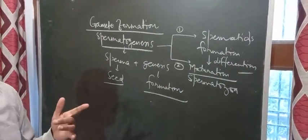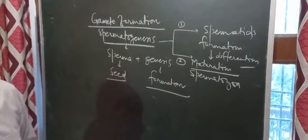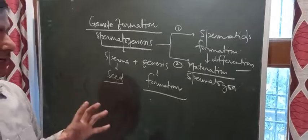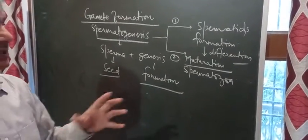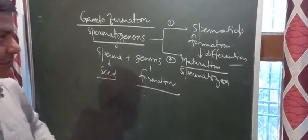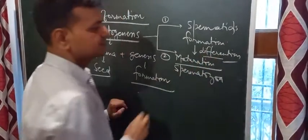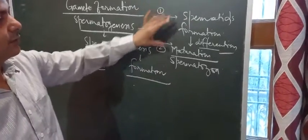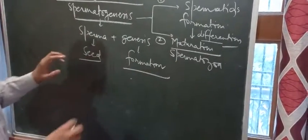There are two differentiations given in the NCERT book diagram: one differentiation at the time of multiplication, and one differentiation at the time of spermiogenesis. In spermiogenesis, the spermatids are first formed and then there is the formation of spermatozoa.